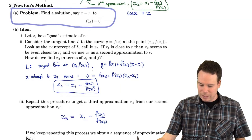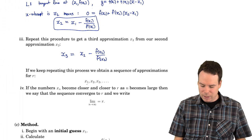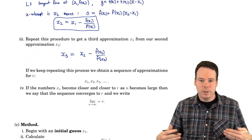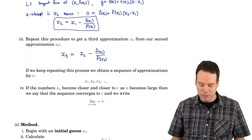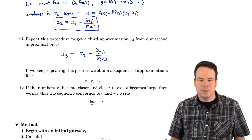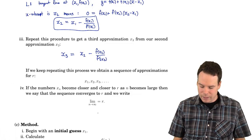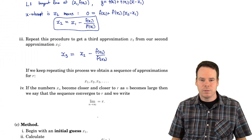Repeating this process produces a sequence x1, x2, x3, and so on, hopefully getting closer and closer to the root r. If the numbers become closer and closer to r as n becomes large, we say the sequence converges to r. The key idea is that starting from an initial guess we build up a sequence of approximations where each one is better than the previous.